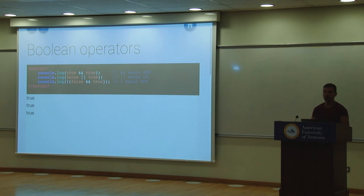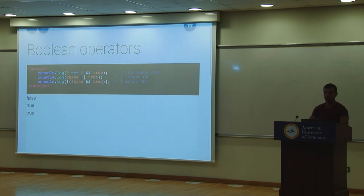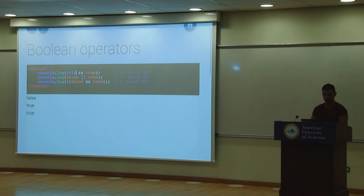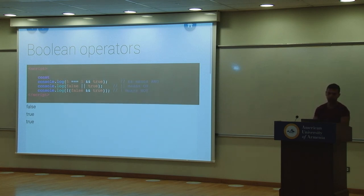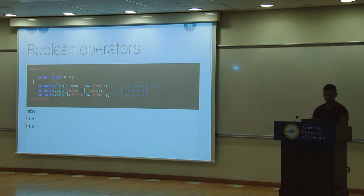Here's an interesting one with multiple NOT operators applied to a boolean variable b = true. With five NOTs: the first flips to false, second back to true, third to false, fourth to true, fifth to false — ending in false.